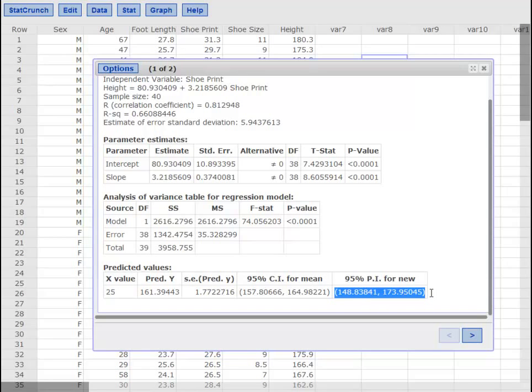So there's your new ŷ and there's your new interval. So if you had to predict a height for a shoe of 30 and predict a height for a shoe of 32, et cetera, you can just keep doing options, edit, and go back and change that each time and get your new results each time. Simple and easy.